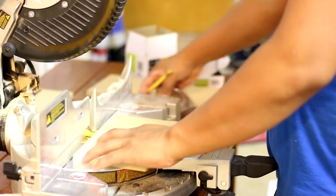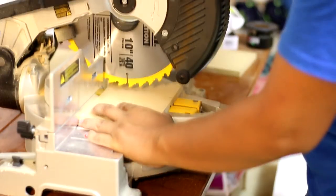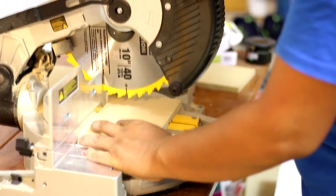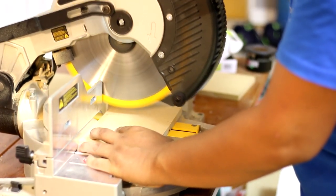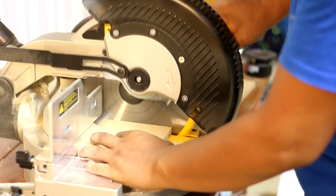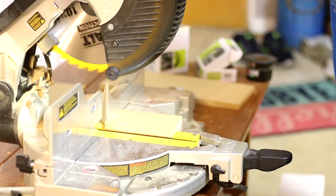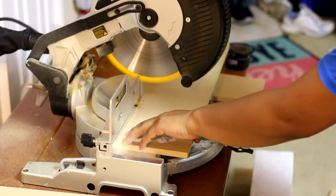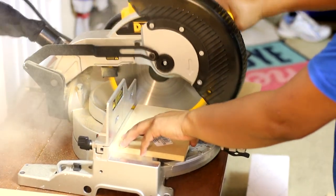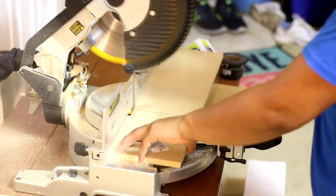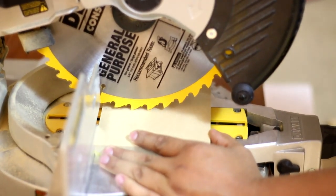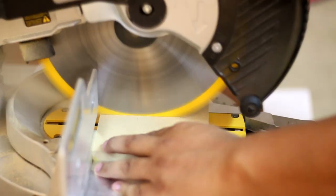Since I do not own a miter saw, Actor measured and cut all the necessary MDF panels for the speaker box. The length, height, and width of the speaker box is 41 x 16 x 16 cm, which is roughly about 16 x 6 x 6 inches.